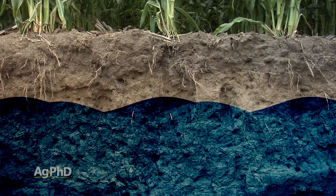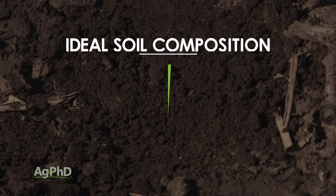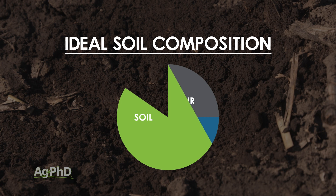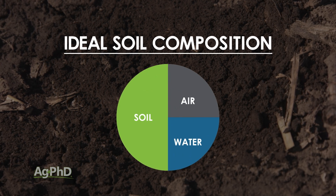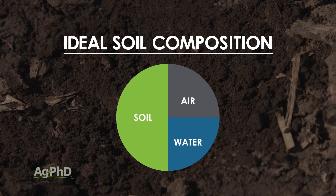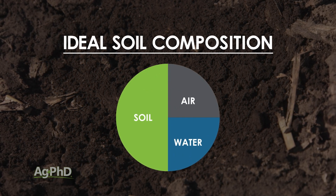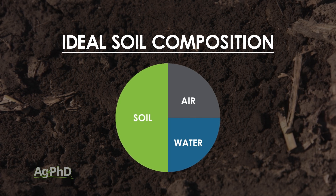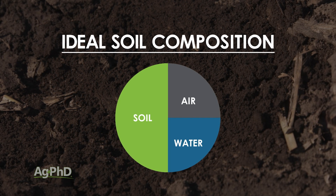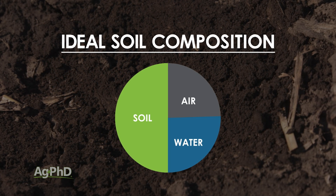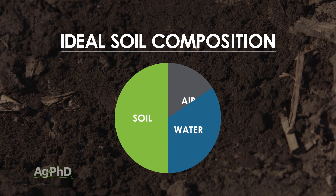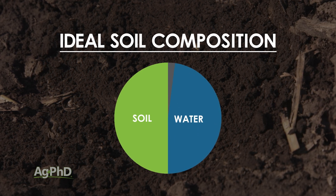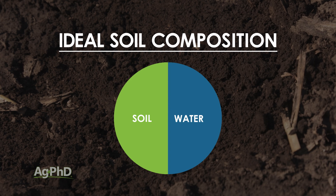Let me describe it this way. In normal soil for crop production we talk about there being roughly 50% dirt, 25% air, and 25% water. If you've got a situation where it's 50% dirt and 50% water, well you're probably into the water table.